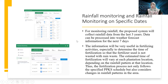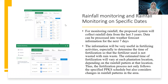There is also rainfall monitoring on specific days. For monitoring rainfall, the proposed system will collect rainfall data from the last three years. This data can be processed into forecast information for the next seven days, which will be very useful in fertilizing activity — especially to determine the time of fertilization so that fertilizer is not washed away by rain.